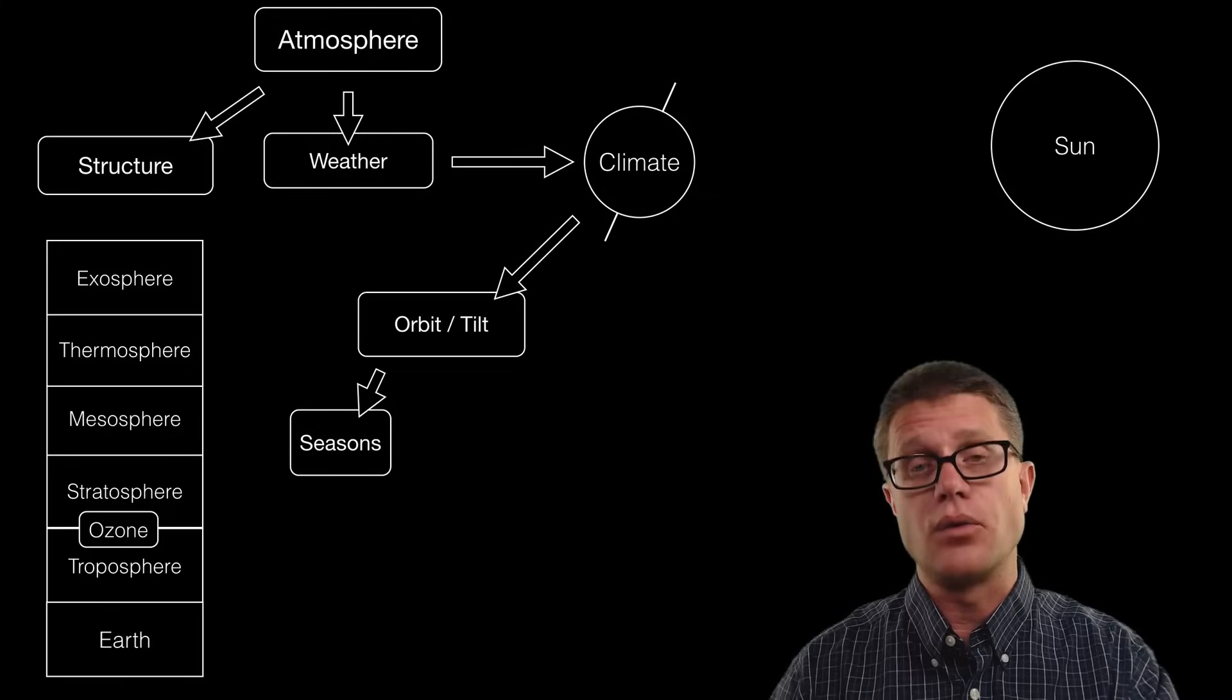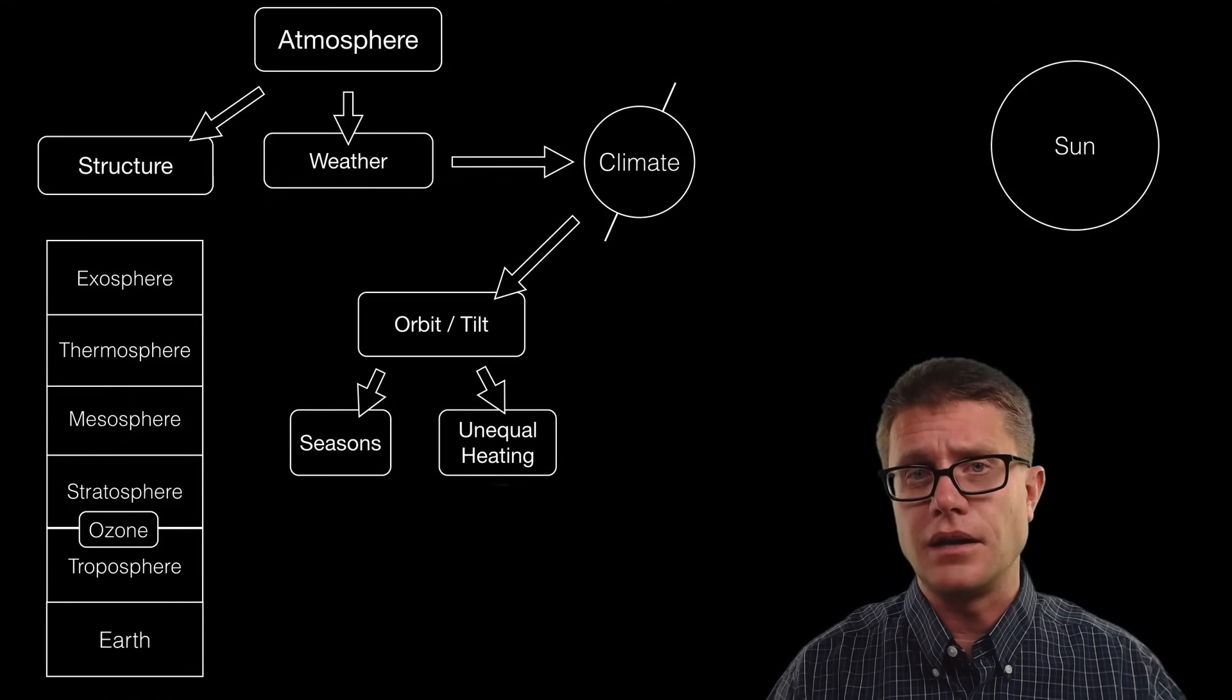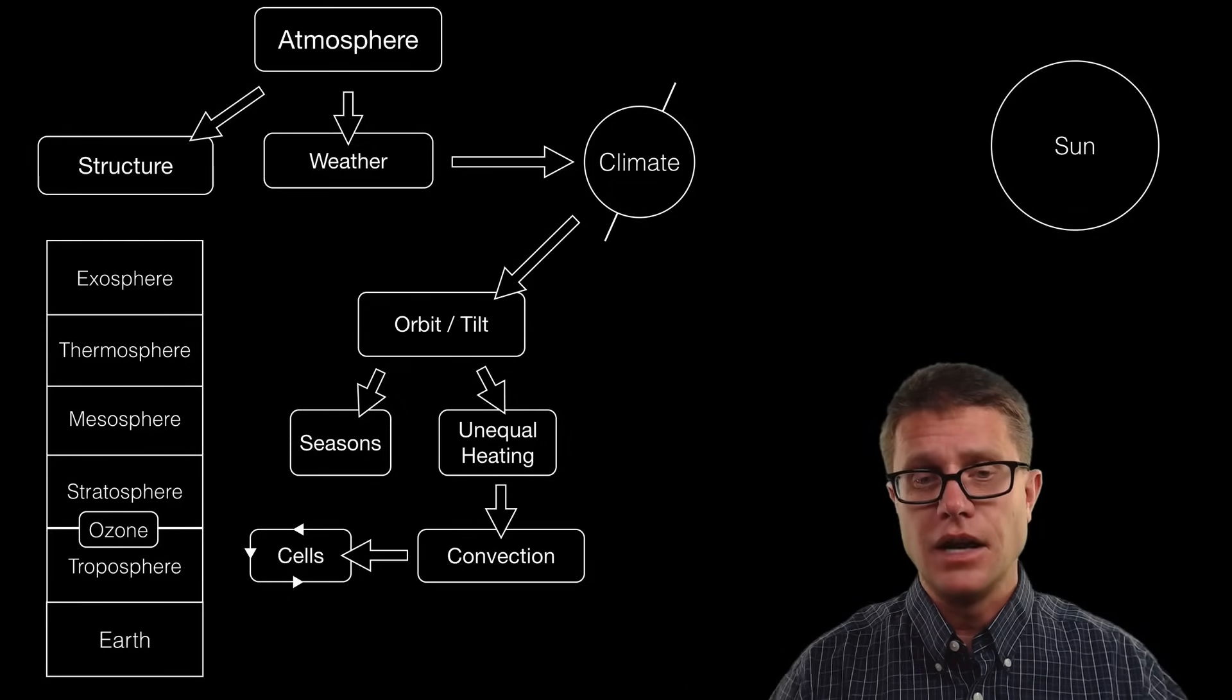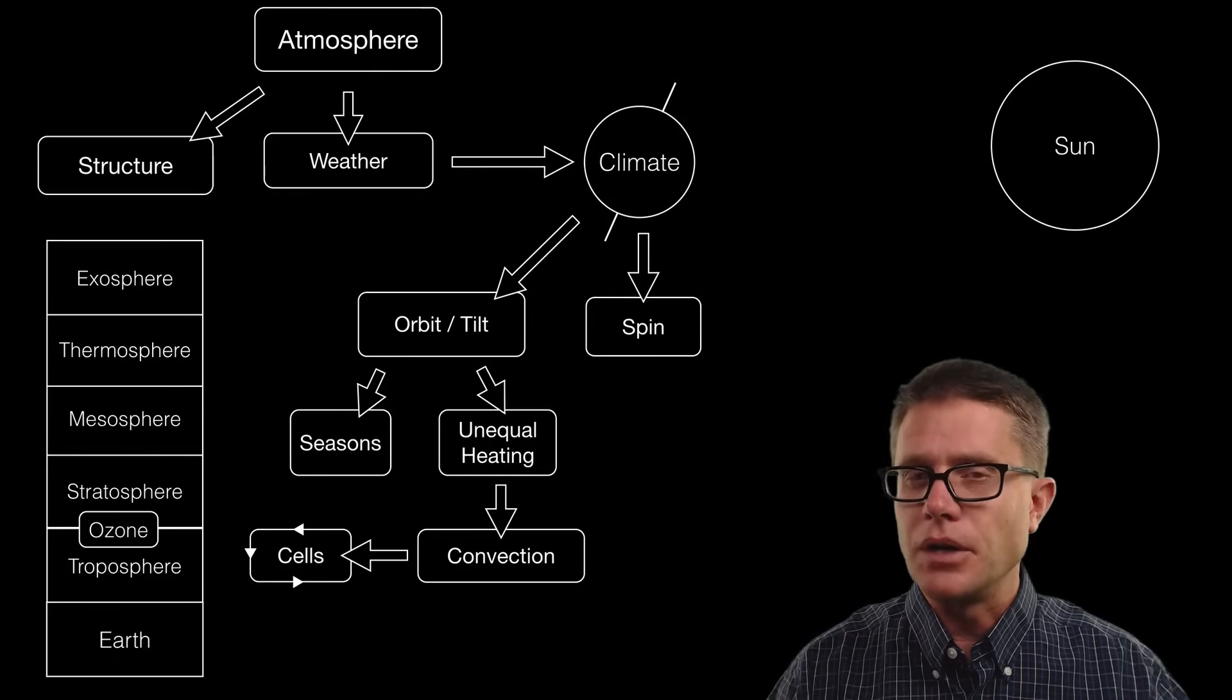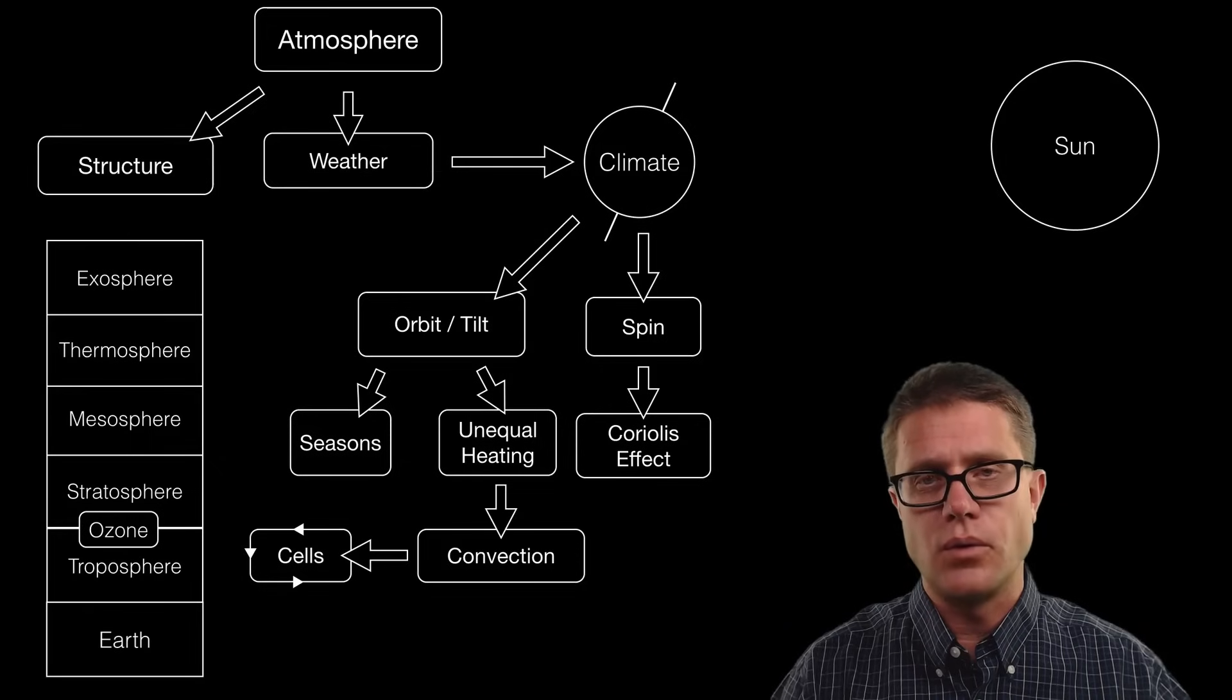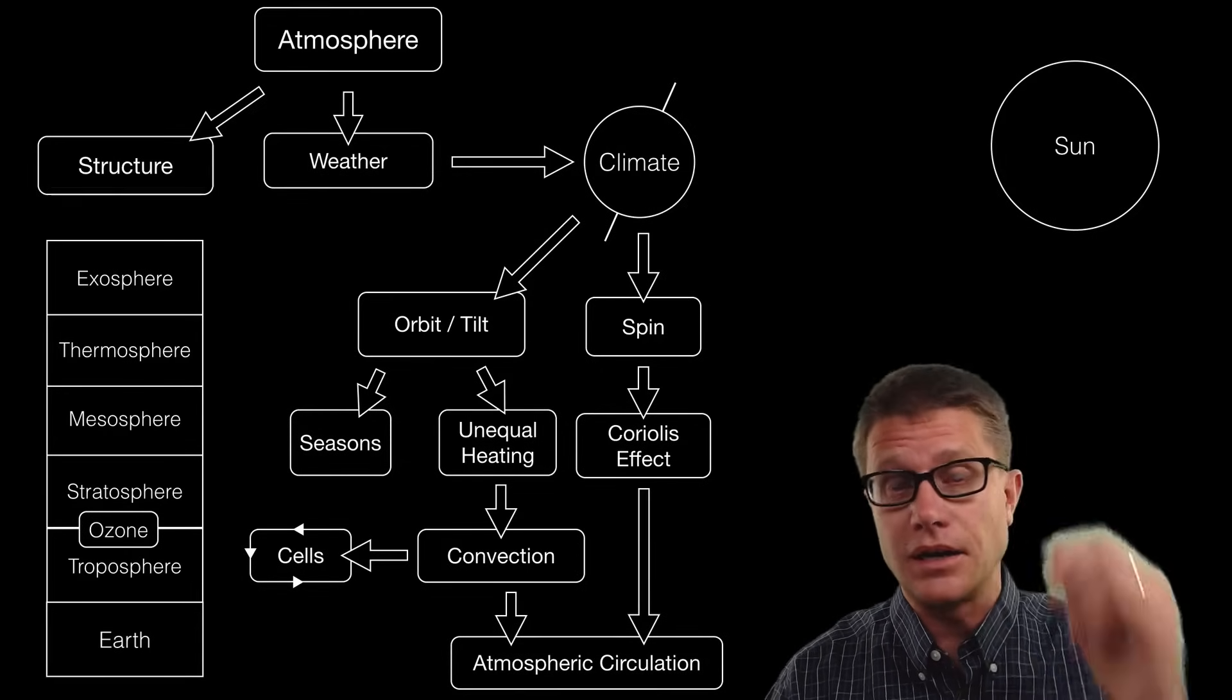Due to our location we get seasons. We are pointed towards the sun in the summer and away from the sun in the winter. But also since we are a sphere we are starting to get unequal heating of the planet. Those convection currents lead to cells in the atmosphere. We have things like the Hadley cell, the Ferrell cell, and they are moving the atmosphere around on our planet. We also have a spinning planet and that creates the Coriolis effect. The combination of these two lead to atmospheric circulation, moving the weather around on our planet.